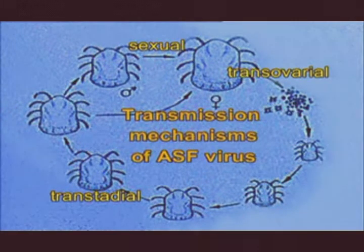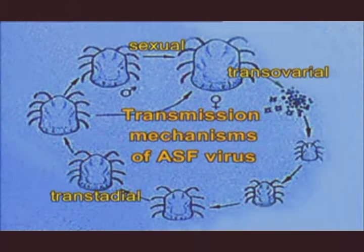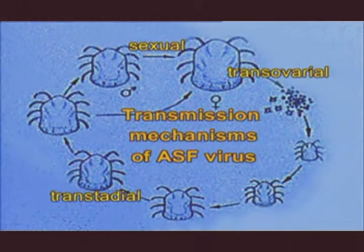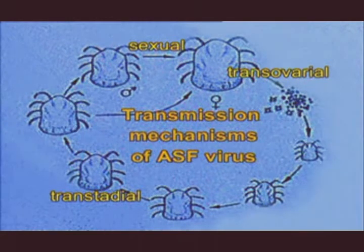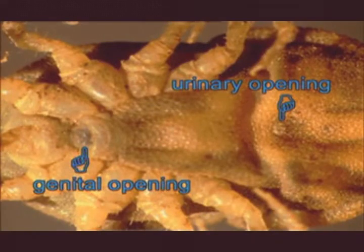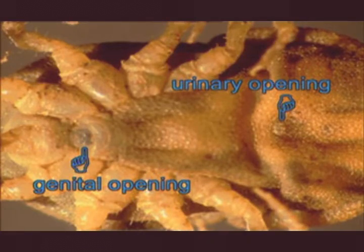ASF virus is transmitted in at least three different ways within tampan populations: transovarially, transstadially, and sexually. Thus, a small proportion of larvae that have never fed may be infected with ASF virus and all subsequent developmental stages of those ticks are likewise infected. Sexual transmission in these ticks is interesting in that it occurs from male to female only, the reason presumably being that coitus in this species involves the male placing a bag or spermatophore into the genital opening of the female.